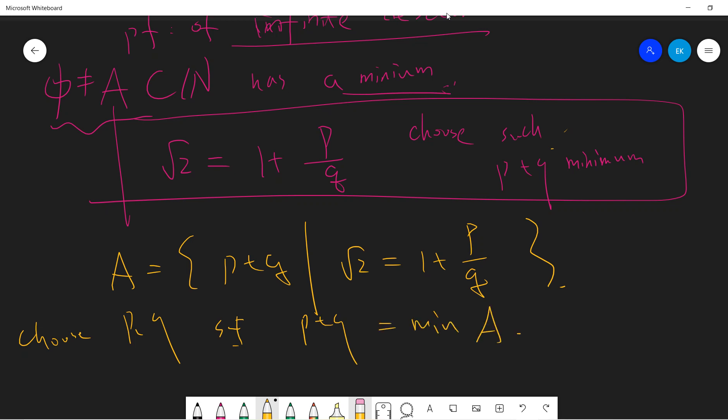And the reason why A must have a minimum is because A is a subset of positive integers, since p and q are all positive.